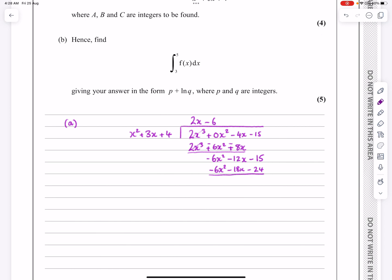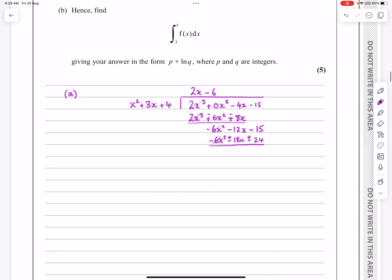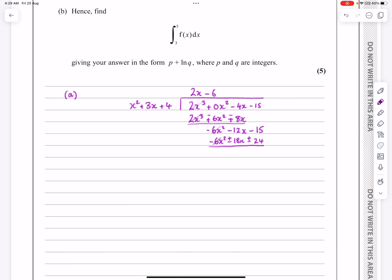And then we're subtracting that again, which means that, in effect, those two will cancel. Minus of a minus is going to make a plus in both of those things. So minus 12 plus 18 will give me 6x. Minus 15 plus 24 will give me plus 9 here.